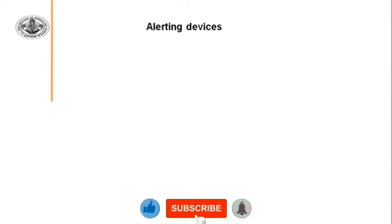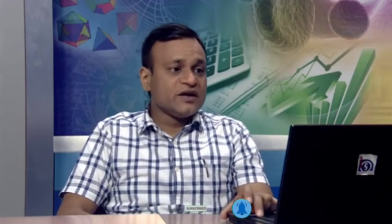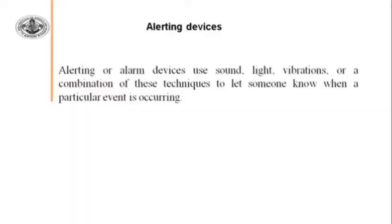The third type of Assistive Devices is Alerting Devices, which are also very important. Alerting or alarm devices use sound, light, vibration, or a combination of these techniques to let someone know when a particular event is occurring. Depending on the situation and the person, we can use sound, light, or vibration in these alerting devices so we get to know what is about to happen.